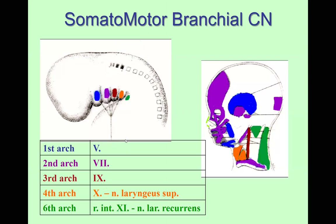Today we will talk about the pharyngeal arches. The second arch is innervated by the facial nerve, the third arch by the glossopharyngeal nerve, and the fourth and sixth are innervated by the complex of the vagus nerve and a part of the accessory nerve. I will explain this later.